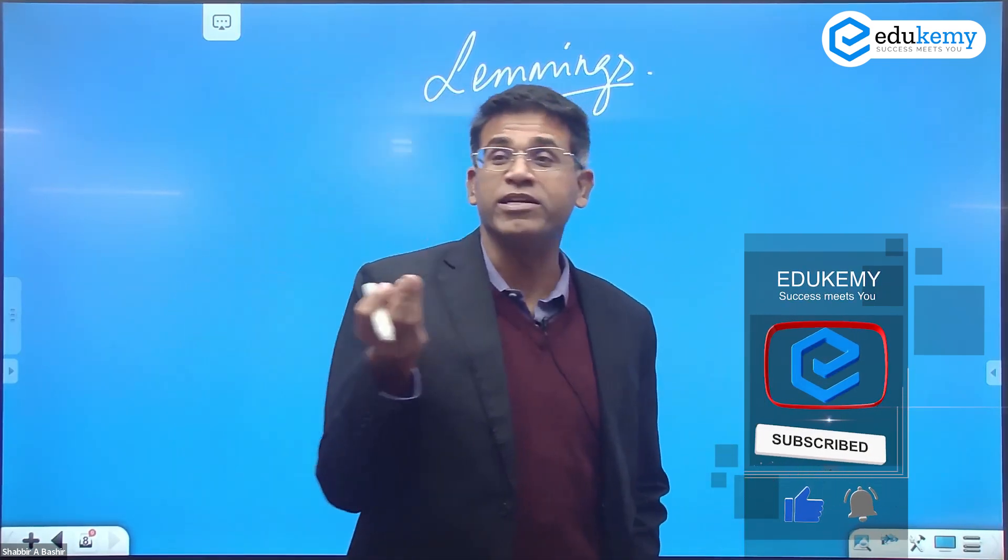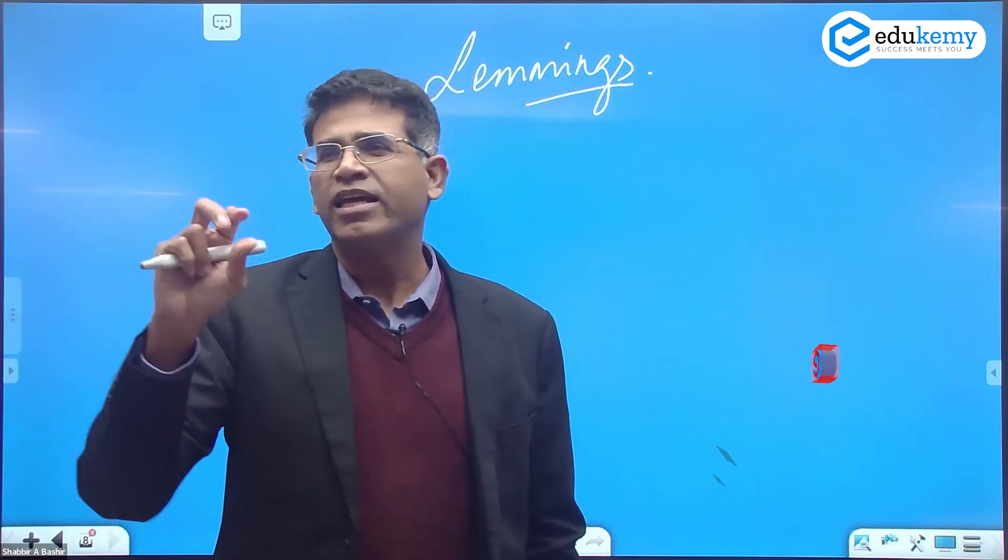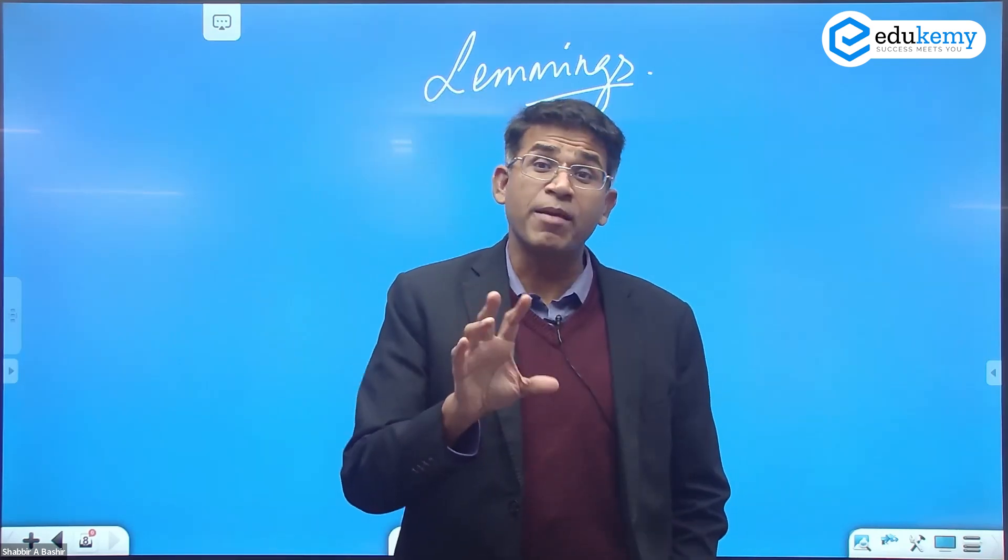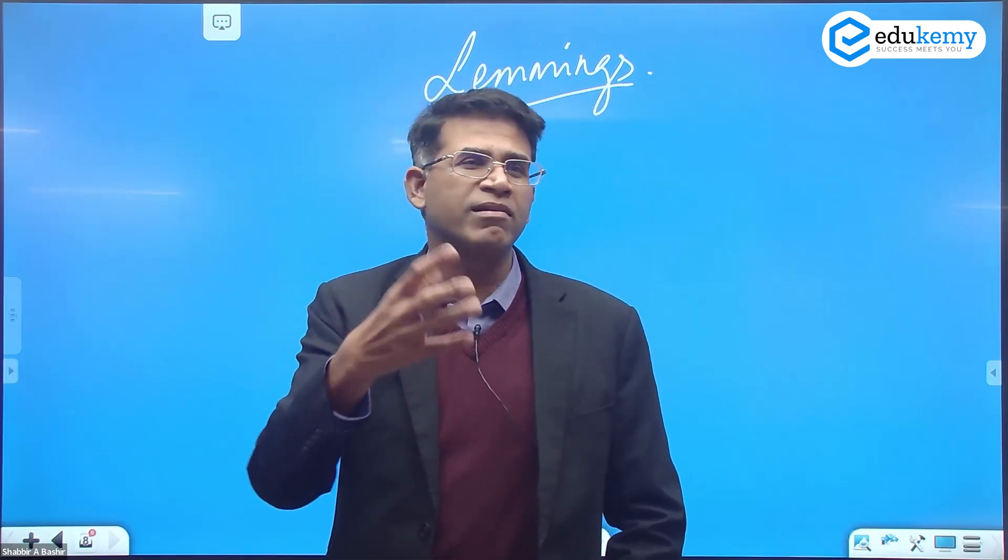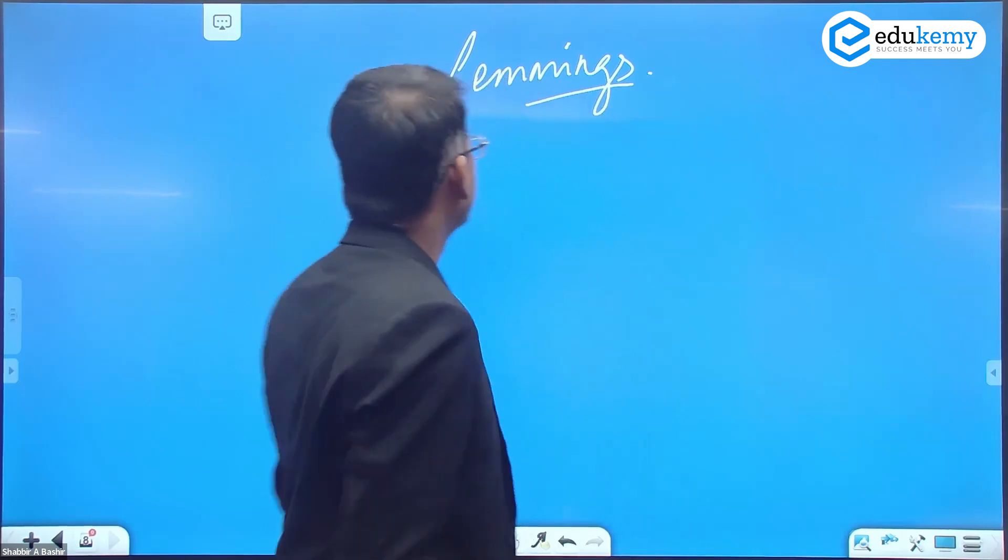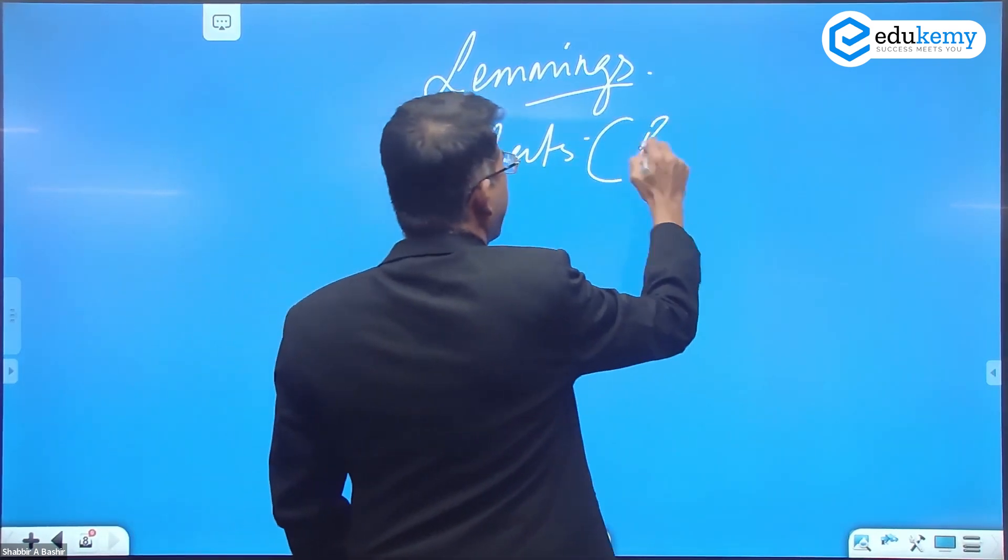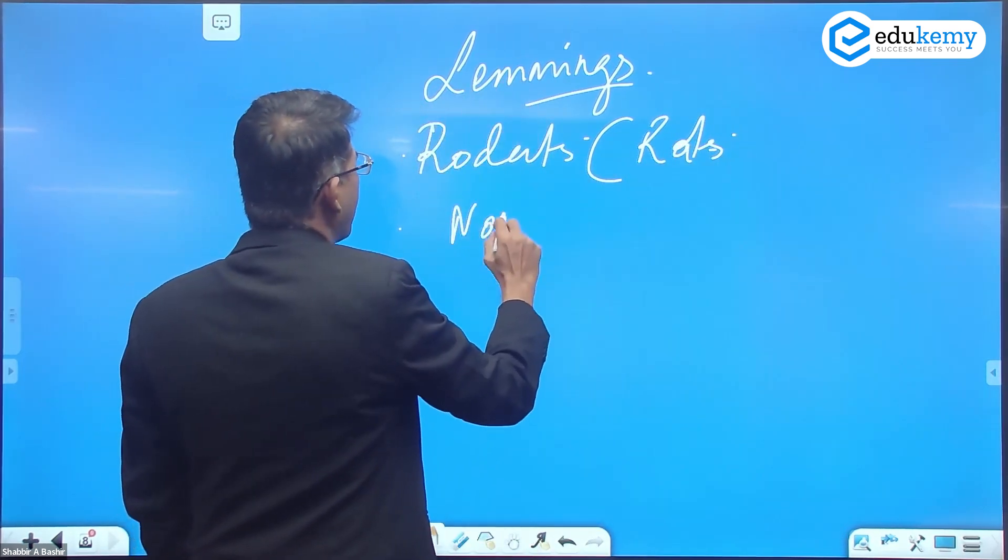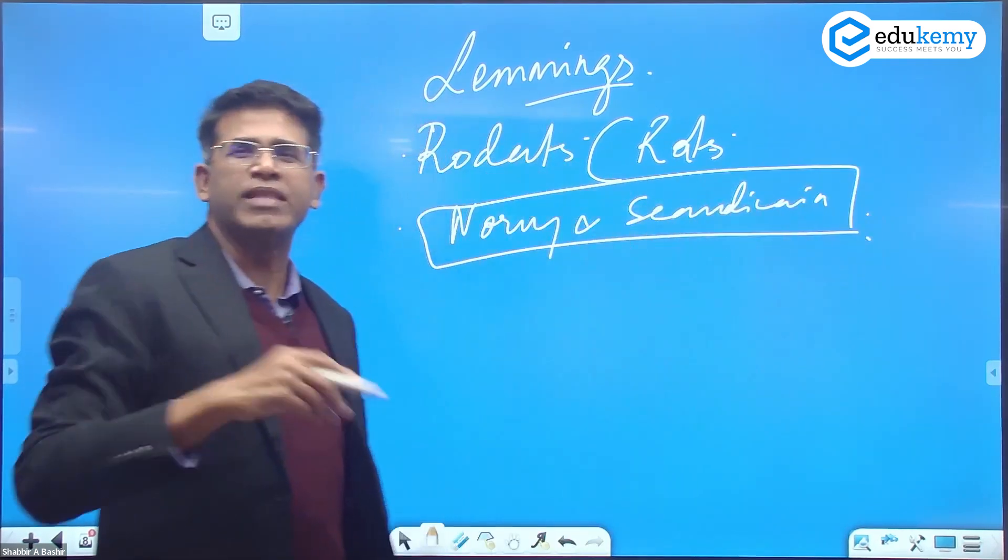Lemmings are rodents. They are like rats, but different. Generally, rats and rodents are not colorful. Lemmings are very colorful - orange, brown, red streaks. They are kept as pets also. Lemmings are rodents, something like rats, and they are found almost exclusively in parts of Norway and Scandinavia.